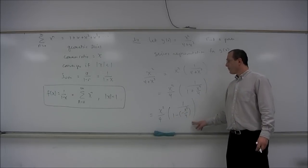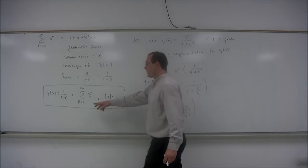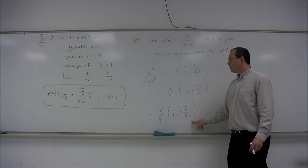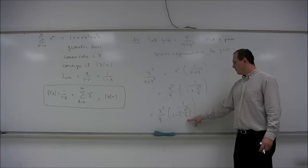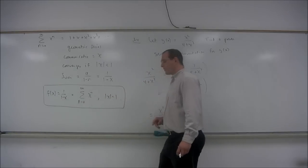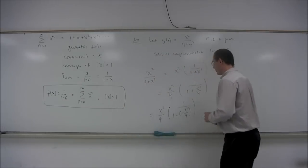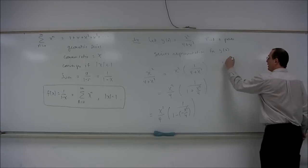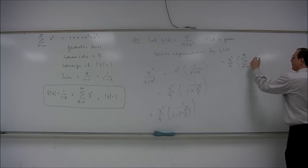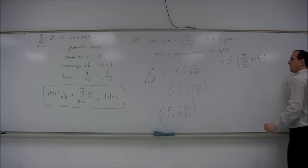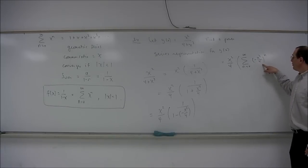Now the quantity in the parentheses looks just like 1 over 1 minus x, except we have the quantity negative x cubed over 4 in the place of x. So to find a power series for this quantity, we will use this equation by substituting negative x cubed over 4 for x. We will do the substitution in all three places. Substituting, we have the x squared over 4, which just hangs around, times the summation n equals 0 to infinity of the quantity negative x cubed over 4 to the n — instead of x to the n, we have substituted negative x cubed over 4.